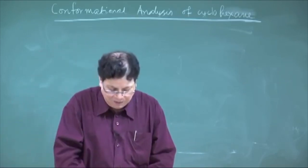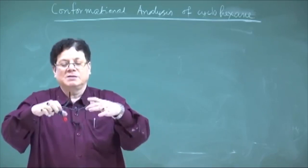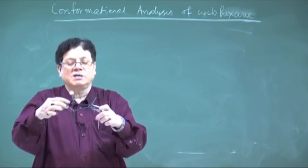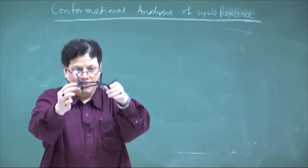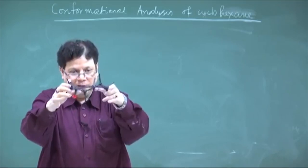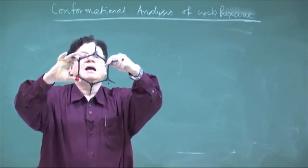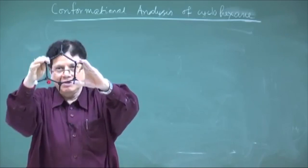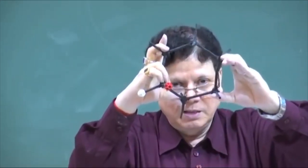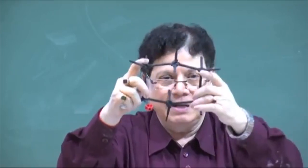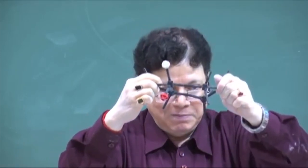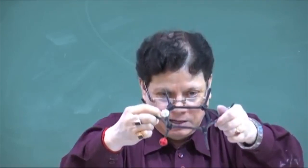According to Baeyer, cyclohexane should be planar. If you try to make it planar, it is very difficult — you cannot really straighten it and make it planar because it is so flexible. But suppose I force it and make it a planar molecule. If you try to make it planar, you see the angle starts bending a little bit, because it will suffer from angle strain — the angles will then be 120 degrees, but the normal angle is 109 degrees. It does not want to remain in this fashion, so it is not stable.